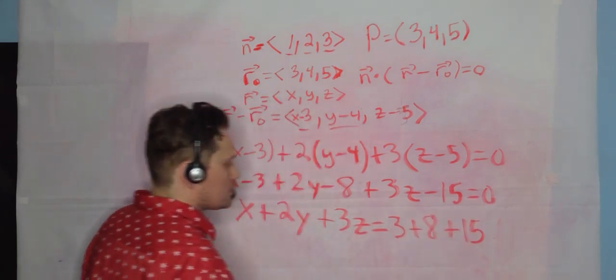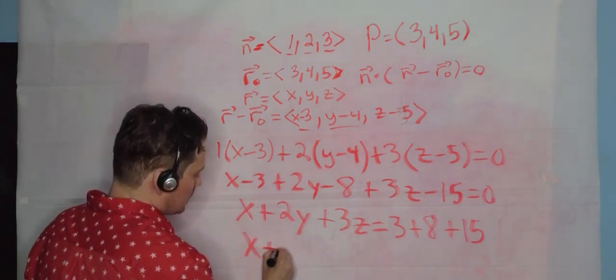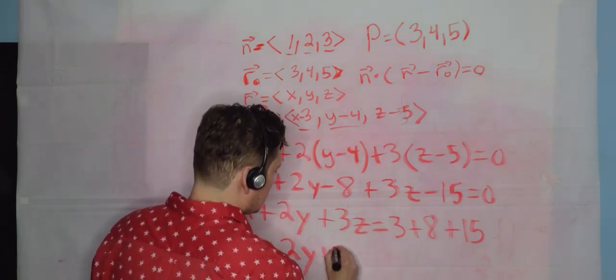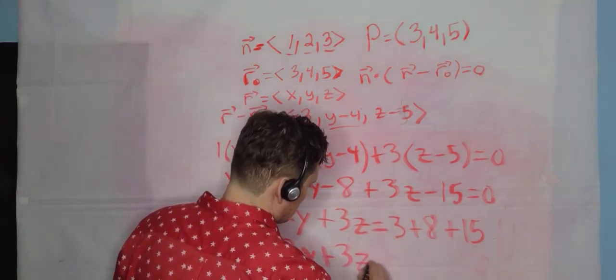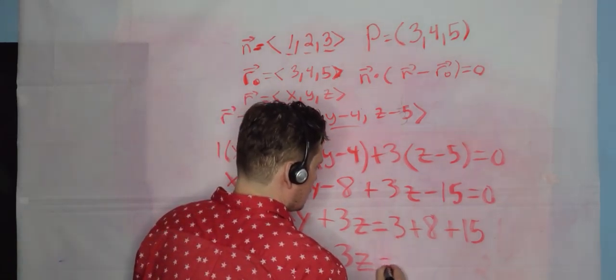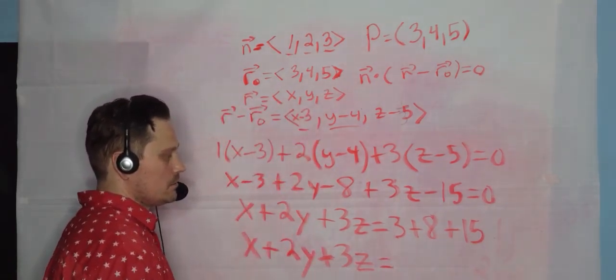And on the right side, you're going to have 3 plus 8, and then plus 15. So move all the terms to one side. But anyway, at the end, you have x plus 2y plus 3z. That's a plus here. And the whole thing then is equal to 26. And that's the equation of the plane.